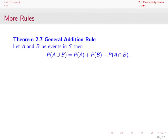Theorem 2.7 is the general addition rule. For two events A and B in S, the probability of their union equals the sum of the individual probabilities minus the probability of their intersection. Earlier we discussed that the probability of a union equaled the sum of probabilities, but only for mutually exclusive events. Here A and B are not necessarily mutually exclusive. If they were, the intersection probability would be 0, reducing to the axiom.